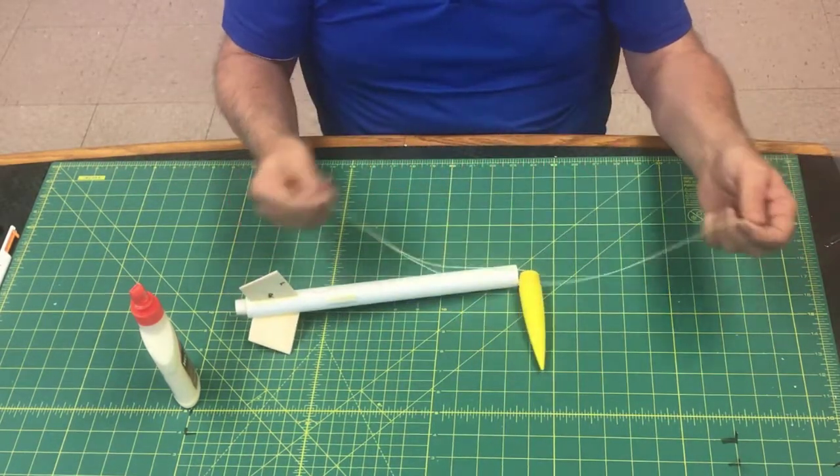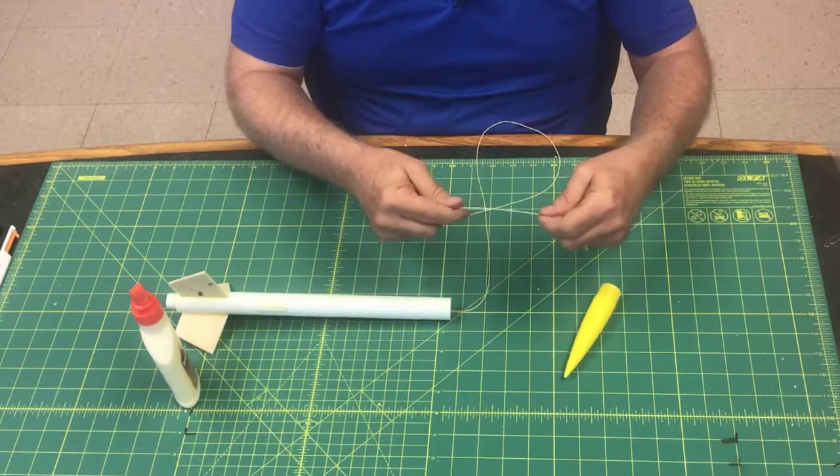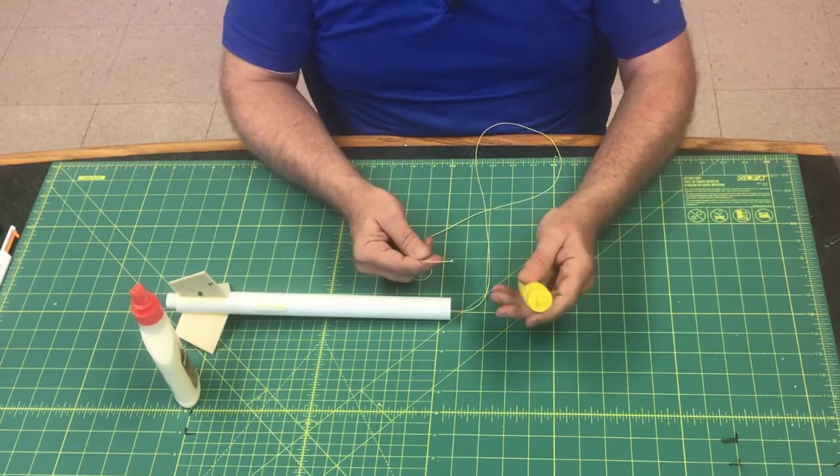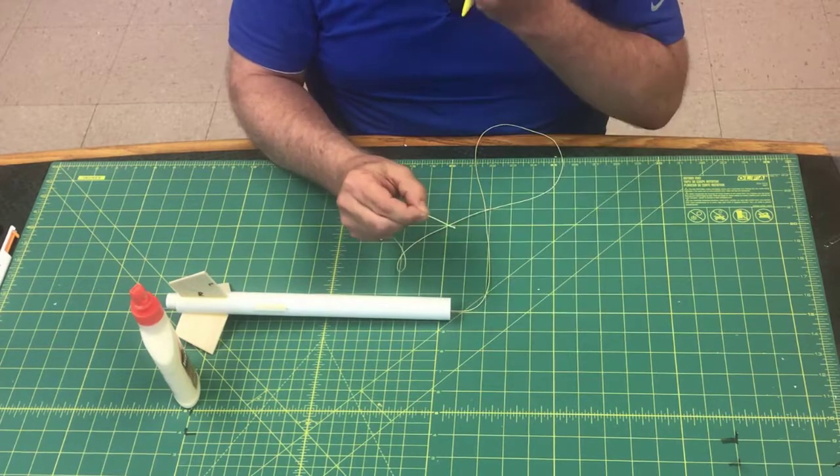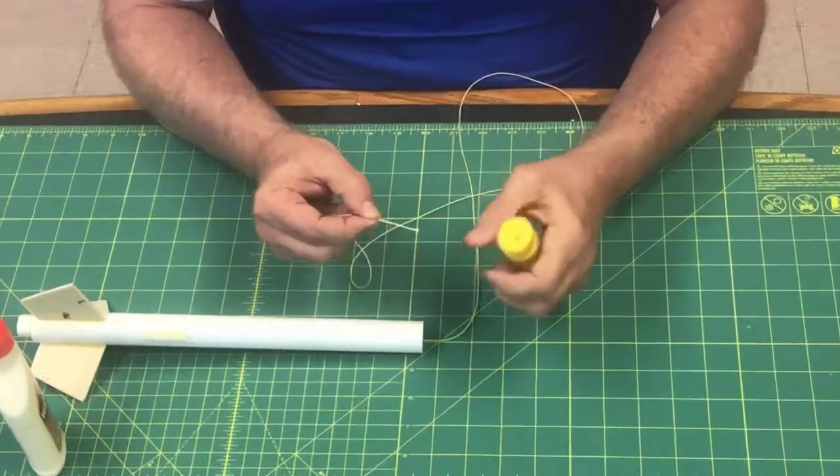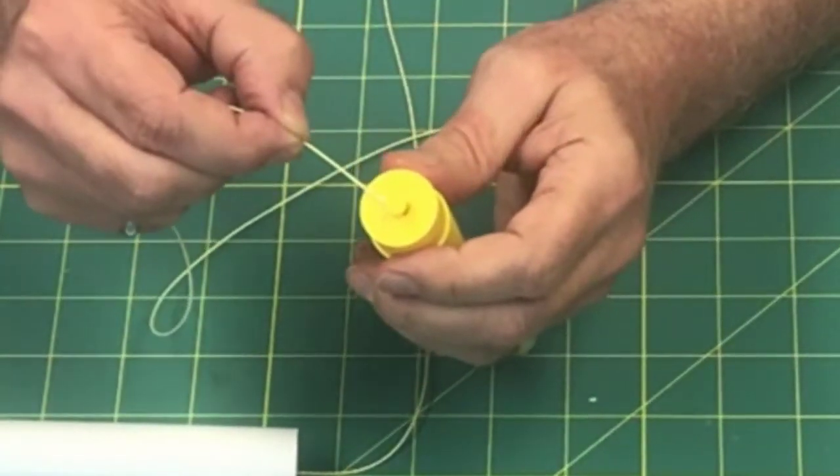Now we just need to attach that to the nose cone. So you're just going to take your shock cord, you're going to slide it through the loopy part of the nose cone.